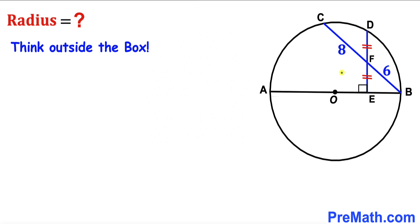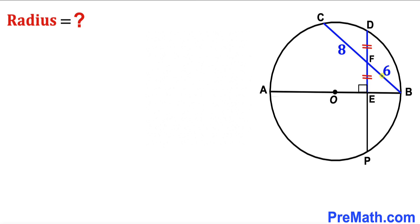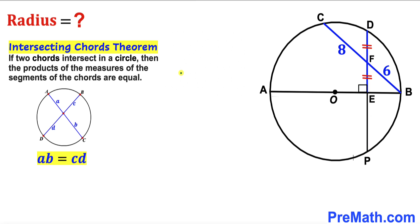We are going to consider the whole circle. In this next step I have extended line DE all the way to point P such that we get the full chord DP. Now let's recall the intersecting chords theorem: if two chords intersect in a circle, then the product of the measures of the segments of the chords are equal.